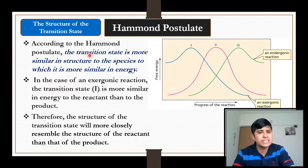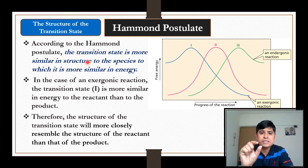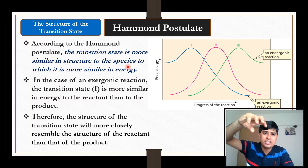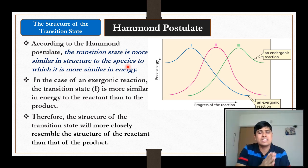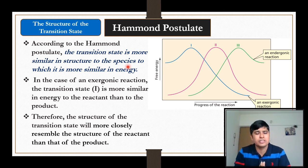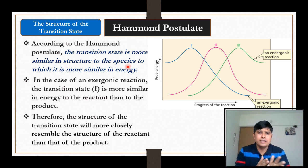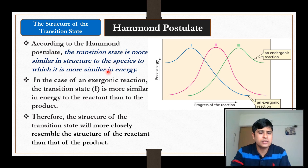According to the Hammond Postulate, the transition state is more similar in structure to the species to which it is more similar in energy. If the transition state energy is approximately equal to the product energy, then the structure of the transition state will look like the structure of the product. If the energy of the transition state is near to the reactant, then the structure of the transition state will look like the reactant.